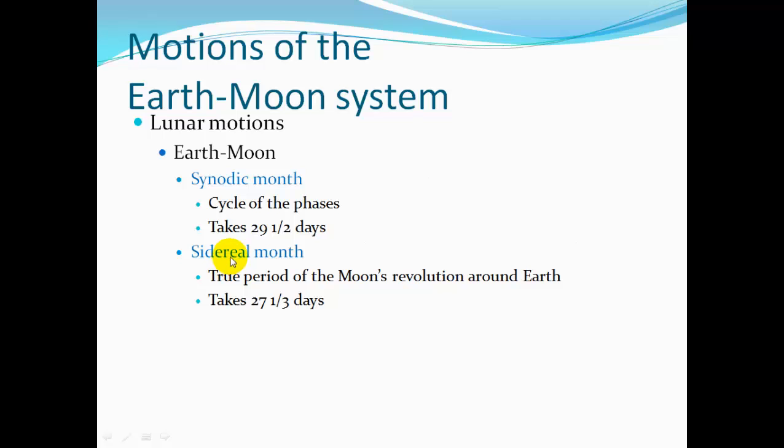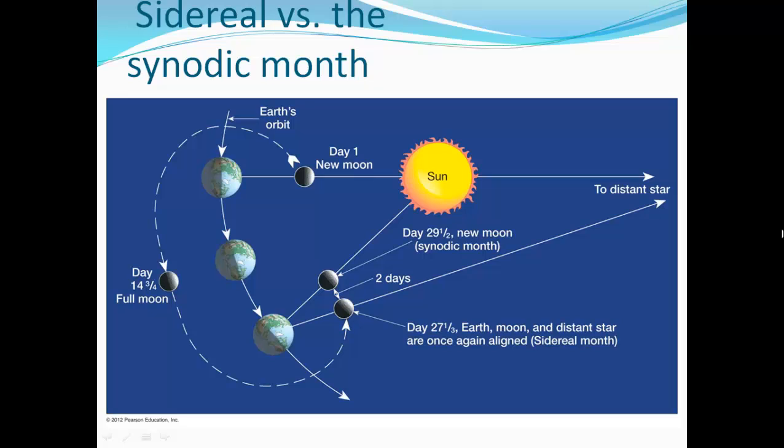The synodic month is cycles of the Earth's phases. It takes 29 and a half days to get through that whole lunar month cycle of phases. Sidereal month is the true period of the Moon's revolution around the Earth. And it actually takes the Moon 27 and a third days to get all the way around the Earth. Just visually, in the lunar phases, it looks like it's 29 and a half.